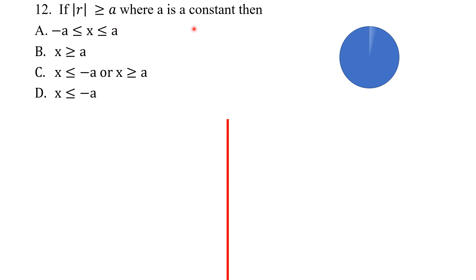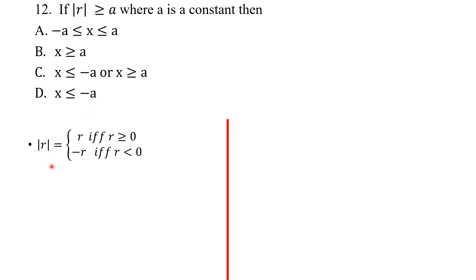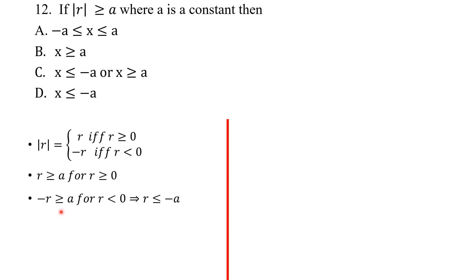For |r| ≥ a where a is a constant: the absolute value function equals r when r ≥ 0, and −r when r < 0. For r ≥ 0, the inequality becomes r ≥ a. For r < 0, the absolute value is −r, so the inequality gives −r ≥ a, which simplifies to r ≤ −a. Combining both cases, r ≤ −a or r ≥ a, and our answer is C.